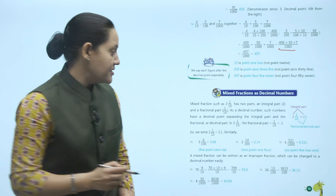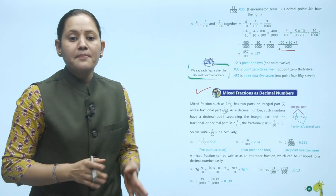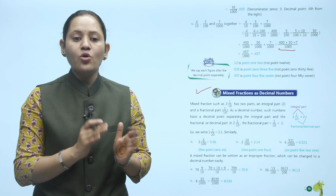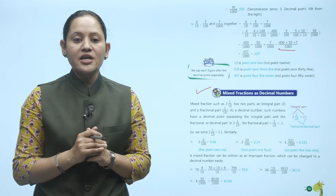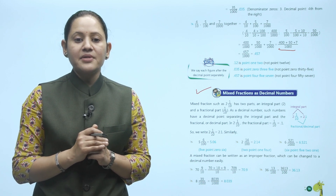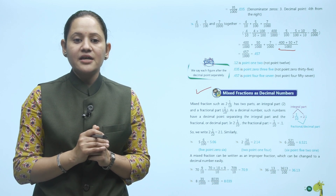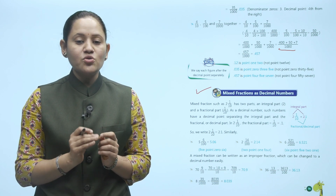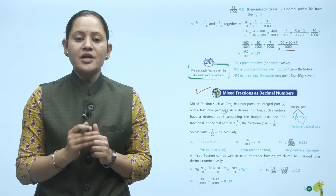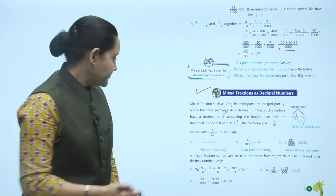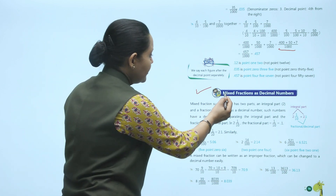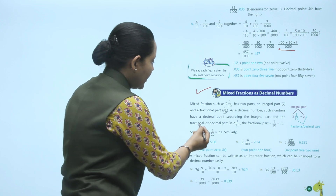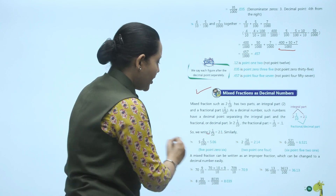Next is mixed fractions as decimal numbers. A mixed fraction such as 2 and 1 by 10 has two parts: the whole part 2 and the fraction part 1 upon 10. As a decimal, 1 upon 10 equals 0.1, so 2 and 1 upon 10 equals 2.1. The decimal point separates the whole number part from the fraction part.